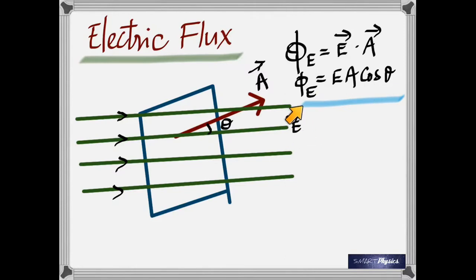What is Φ_E? It is the electric flux passing through the surface. If theta was 90 degrees in that diagram, how much electric flux would pass through it? The surface would be oriented parallel to the field. The answer is zero — and that is very clear because cos 90 is zero. So that's the formula for electric flux passing through a surface.